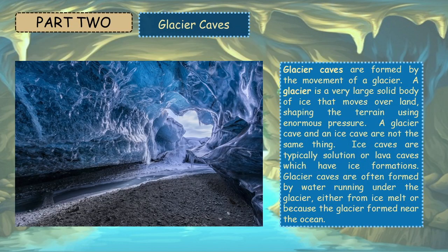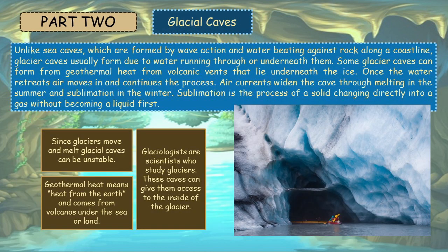Glacier caves are formed by the movement of a glacier. A glacier is a very large, solid body of ice that moves over land, shaping the terrain using enormous pressure. A glacier cave and an ice cave are not the same thing. Ice caves are typically solution or lava caves which have ice formations. Glacier caves are often formed by water running under the glacier, either from ice melt or because the glacier formed near the ocean. Unlike sea caves, which are formed by wave action and water beating against rock along a coastline, glacier caves usually form due to water running through or underneath them.